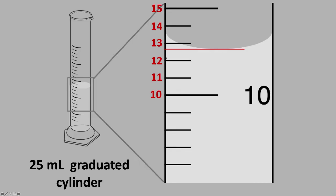So 0.1, 0.2, 0.3, 0.4, 0.5, 0.6, 0.7, 0.8, 0.9, and then we're seeing where the bottom of this meniscus lies in that 12 to 13 range.